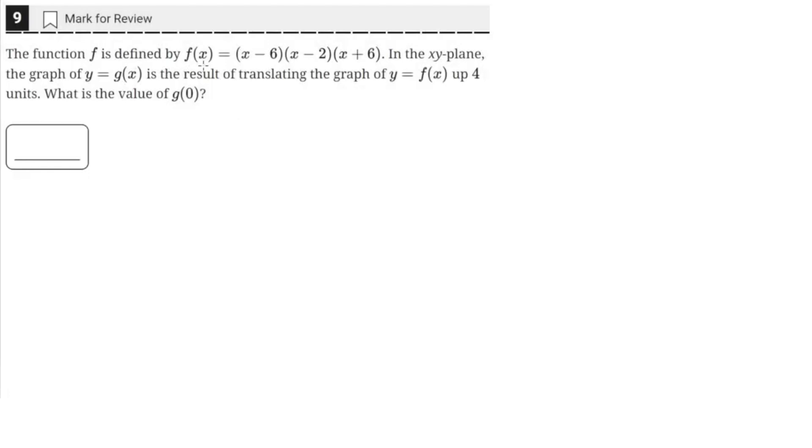The function f is defined by f(x) equals this quantity here in the xy-plane. The graph of y equals g(x), a different function, is the result of translating the graph of y equals f(x) up 4 units. What is the value of g(0)?